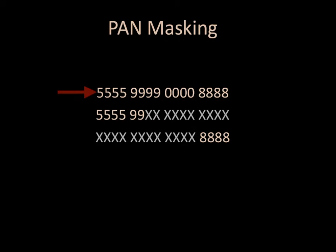The primary account number, or PAN, is one of the data elements strongly protected by the PCI DSS. Version 3.1 did require masking of all unnecessary digits of the PAN when displayed on any media. Version 3.2 simply makes it clearer that under most circumstances, no media — paper or electronic — should display the entire PAN.